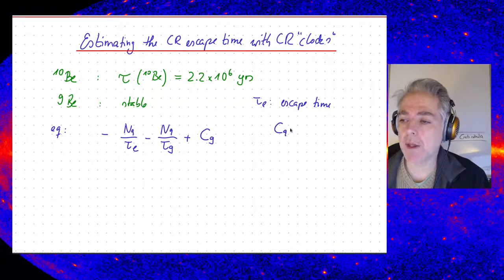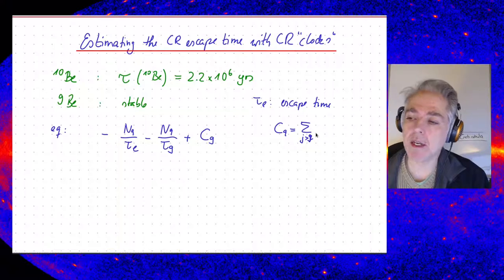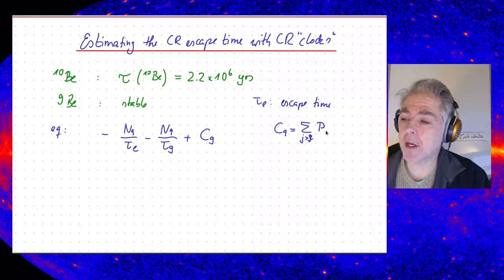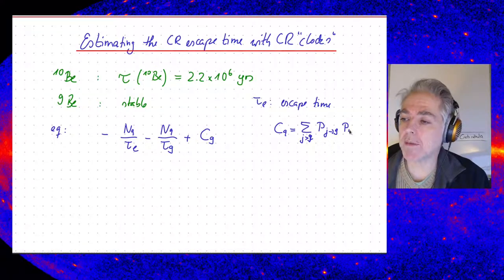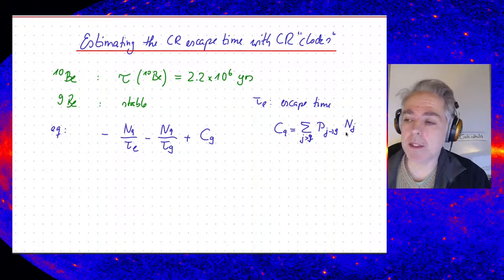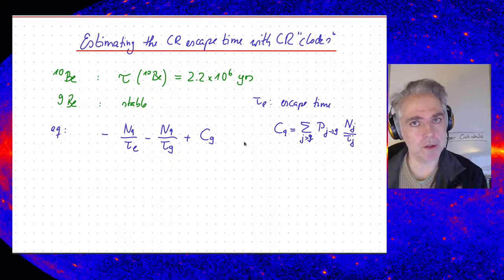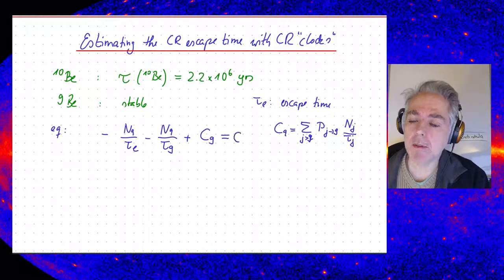And then there is, of course, the source term of heavier nuclei which do spallation to produce beryllium-9. This term I call C9, which is a constant. C9 is defined as the sum over all nuclei with mass number J larger than 9 — anything heavier can do spallation to produce beryllium-9 — times the probability for spallation, times the number of particles of mass number J, divided by the spallation time tau_J. In equilibrium this becomes zero, as we assume they balance each other.